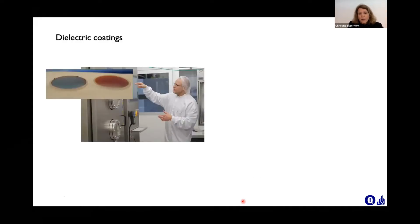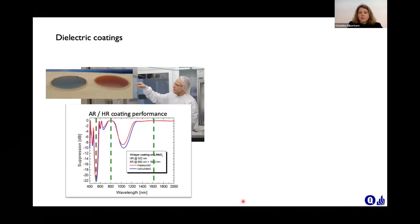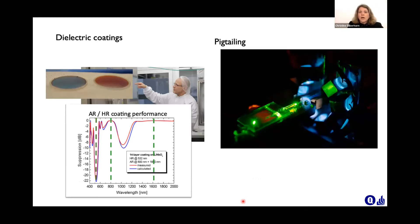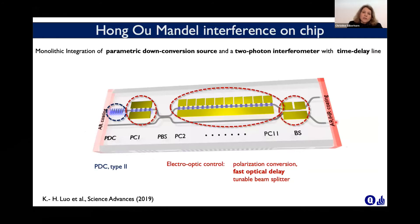When we have fabricated the waveguides, we do at the end facet dielectric coatings, which we can also customize, which is important for interfacing them to optical fibers with low loss connections. And finally, we also bring them to the lab and do fiber coupling, where we can achieve quite high coupling efficiencies already. Now, I don't want to go into detail about which kind of different devices we have fabricated, but I want to show you our most advanced device where you can see what can be done.